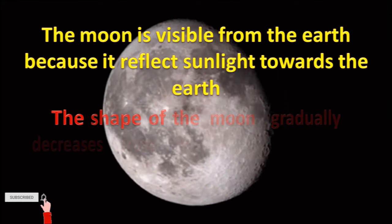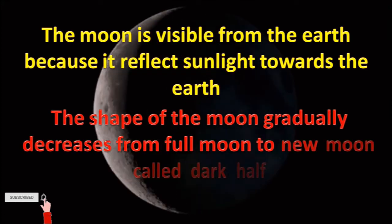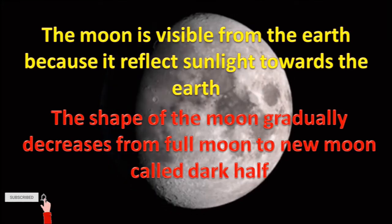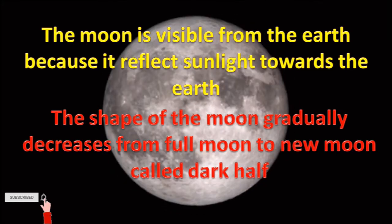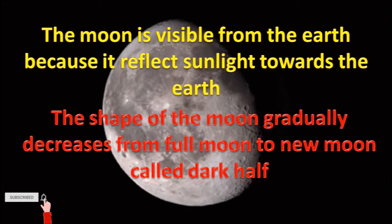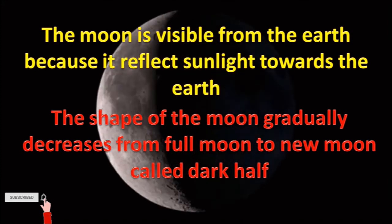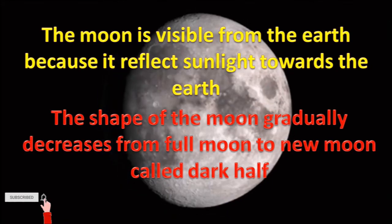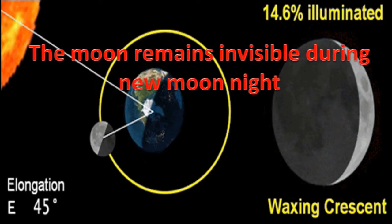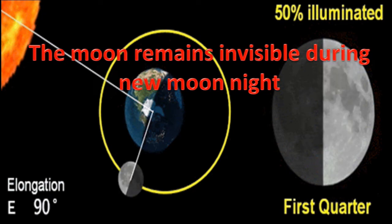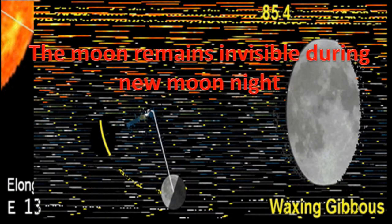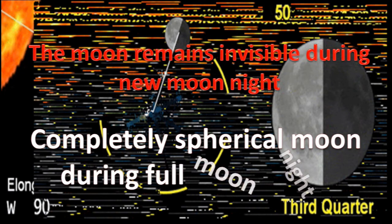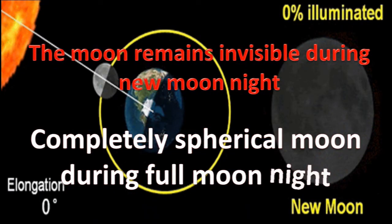The shape of the moon gradually decreases from full moon to new moon, called the dark half. In the dark half, the dark part of the moon increases and the bright part decreases. The moon remains invisible during new moon night, while a completely spherical moon is observed during full moon night.